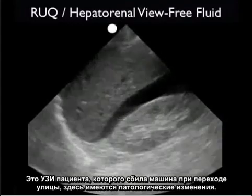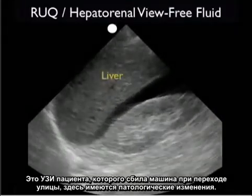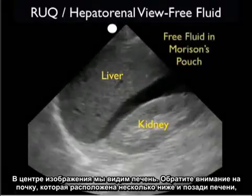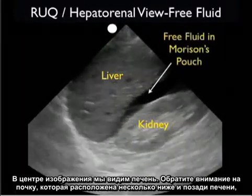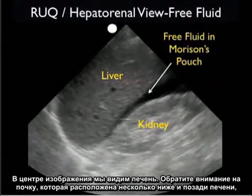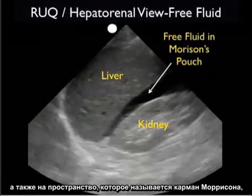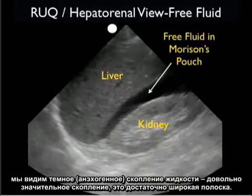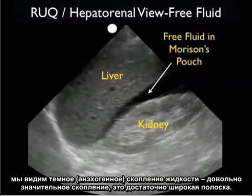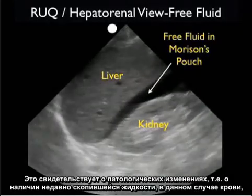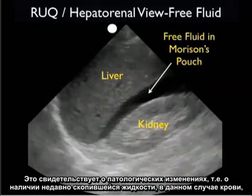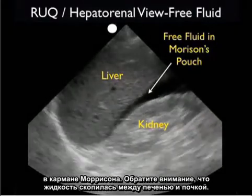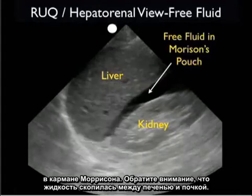Here's a positive ultrasound examination from a patient who was hit by a car while crossing the street. We see the liver in the middle of the image, with the kidney located inferior and posterior to the liver. In between the liver and kidney, in the potential space known as Morrison's pouch, we see a dark or anechoic fluid collection — not insignificant, actually a pretty large stripe in this patient. This represents a positive examination, the presence of fresh fluid — in this case blood — within Morrison's pouch, layering out between the liver and kidney.